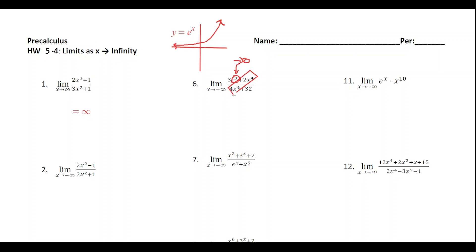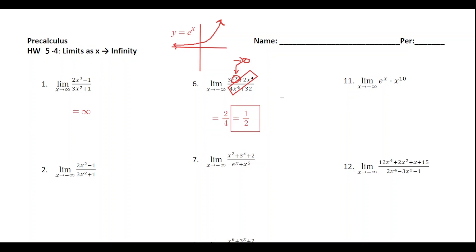We can basically ignore that e to the x term because it's getting closer and closer to zero, and instead examine the terms that have degree four — those are the largest degree among the remaining terms, since the only other one is a constant 32. As x approaches negative infinity with a rational function where the degrees are the same, you compare the leading coefficients of the numerator and denominator. The coefficients are two and four, so the limit approaches one half.